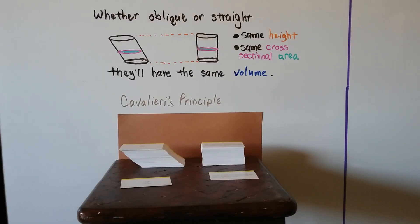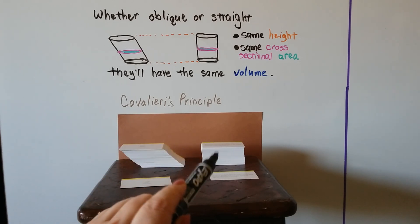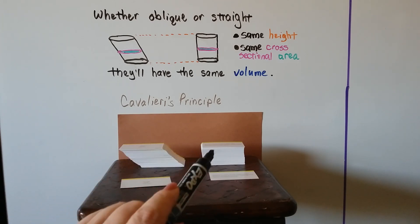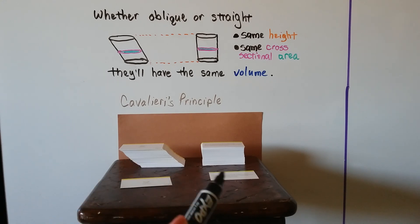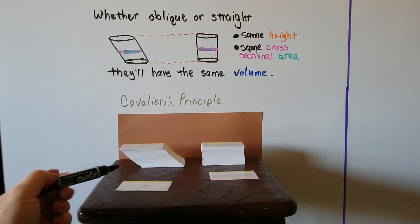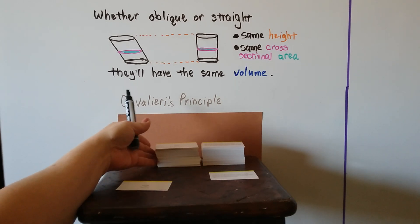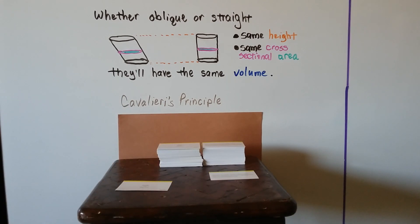Here I have two stacks of SAT cards. Both stacks have the same size SAT cards and 100 cards each, whether it's a right prism or oblique. They both have the same size cards, meaning the cross-sections are the same area, so they're going to have the same volume. Same height, same cross-sectional area, same volume — that's Cavalieri's Principle.